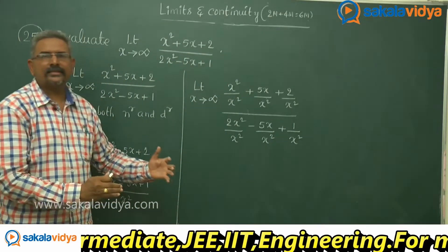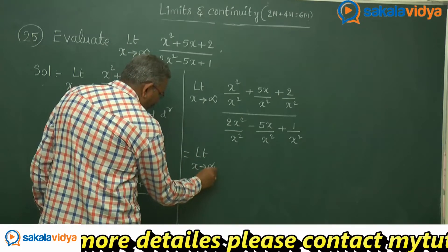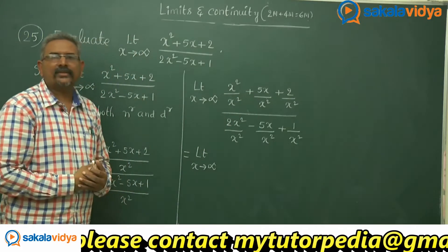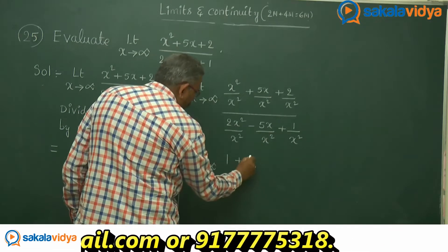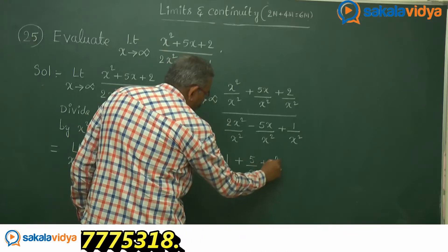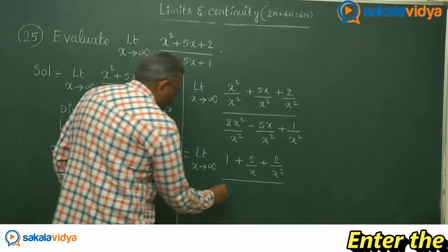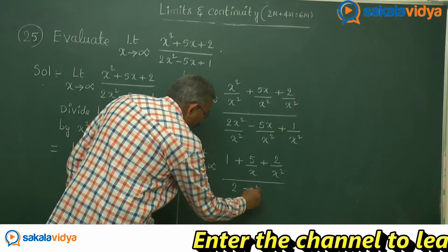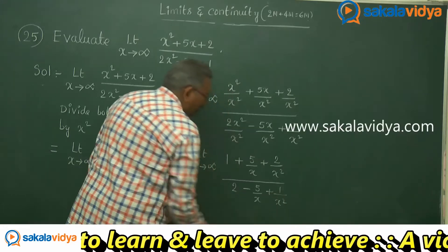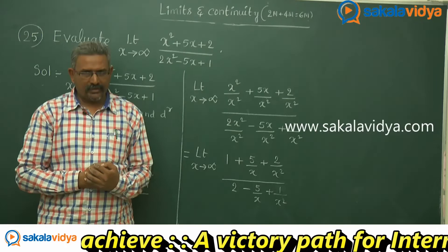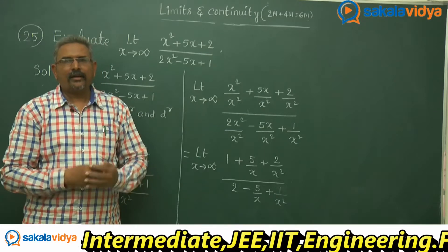Let us simplify further. Limit x tends to infinity: x squared over x squared gets cancelled — you get 1. Plus 5x over x squared is 5 over x, plus 2 over x squared, divided by 2x squared over x squared which is 2, minus 5 over x, plus 1 over x squared. As x approaches infinity, 1/x, 1/x squared, and so on all approach 0.